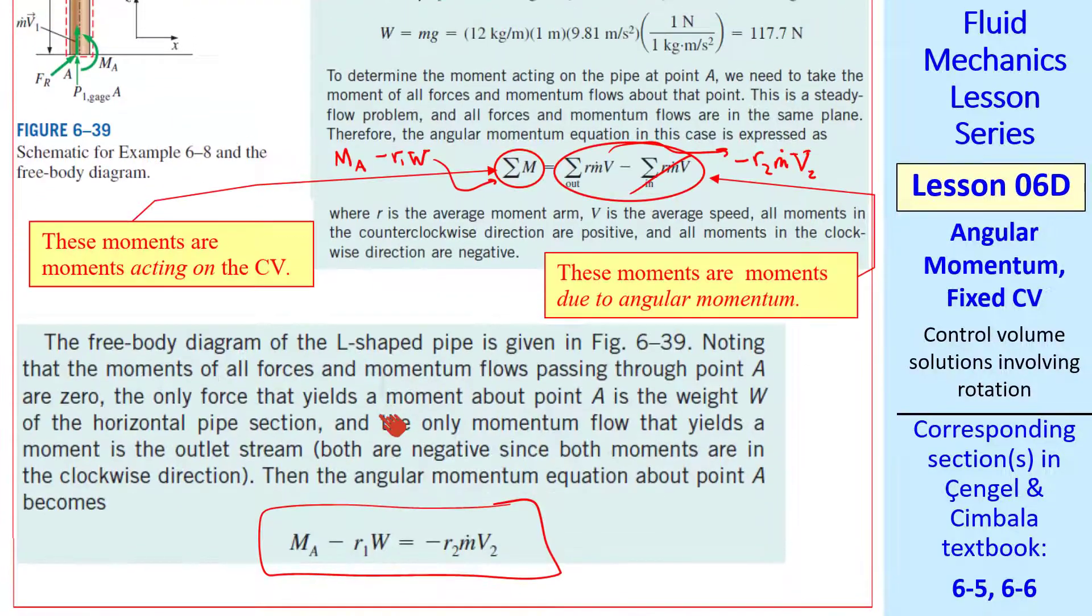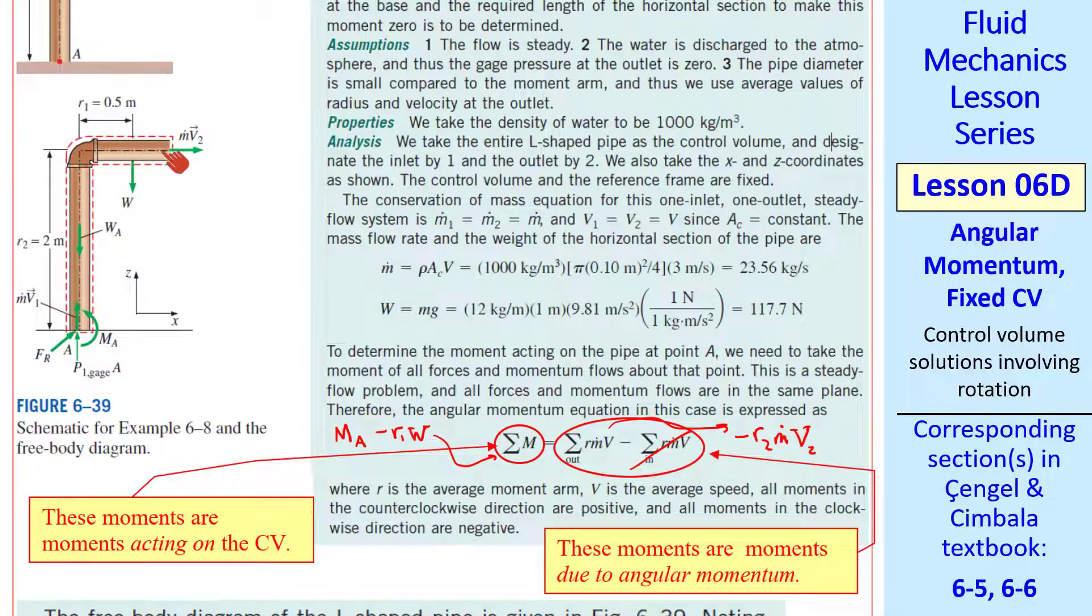Going back to the diagram, we see that by making this horizontal length of pipe longer, the moment arm of the weight moment is increased. And at the calculated length, the counterclockwise moment caused by this jet and this moment arm will be balanced by the weight and this moment arm, rendering MA 0.